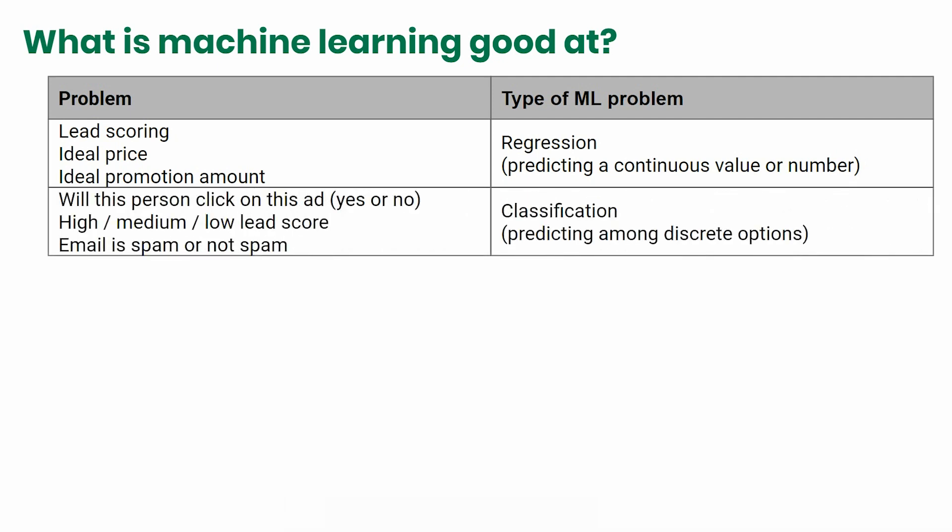If instead you're trying to predict whether a person is going to click on an ad — which is a yes/no — or you're trying to do lead scoring that's like high, medium, or low, or figure out if somebody is sending a spam email, then you use classification, which is choosing between discrete values.